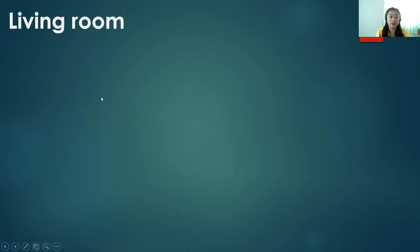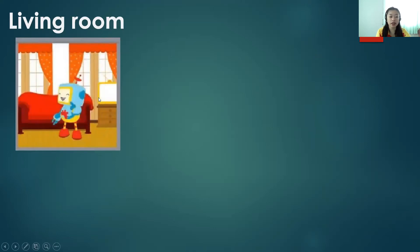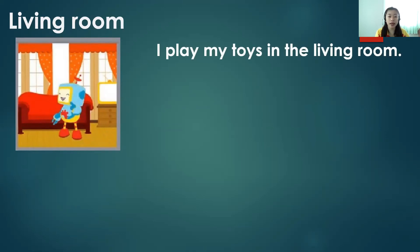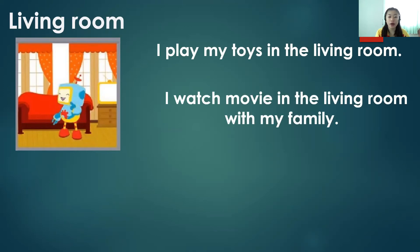Next we have the living room. What are the things that we do in the living room? We can see a sofa, a television, and a cupboard in the living room. I play my toys in the living room. I watch a movie in the living room with my family. There are many things we can do in the living room.